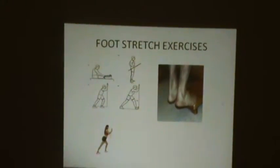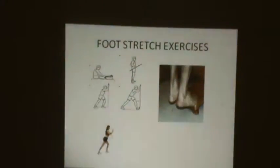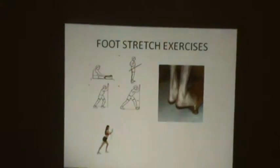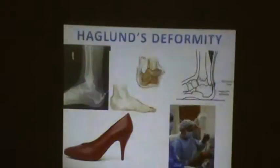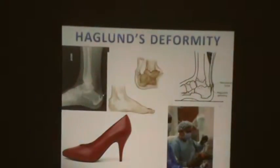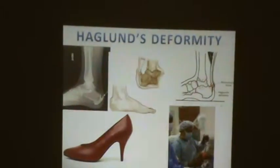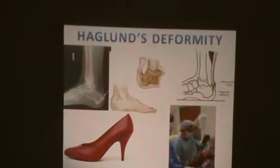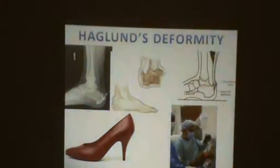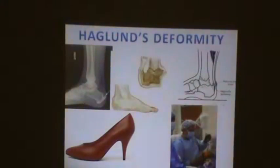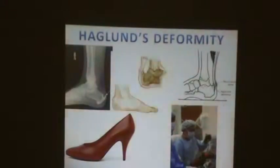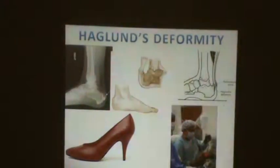Unfortunately, for Haglund's deformity with the spur at the back of the heel, the only treatment is surgery. The four conditions — Achilles tendonitis, plantar fasciitis, calcaneal spur, and Haglund's deformity — are the commonest conditions I see in my day-to-day practice as a pain physician.